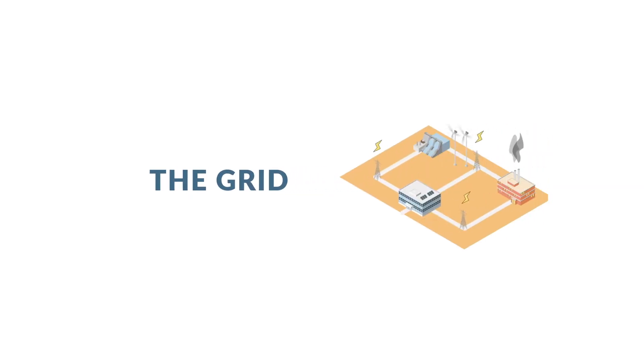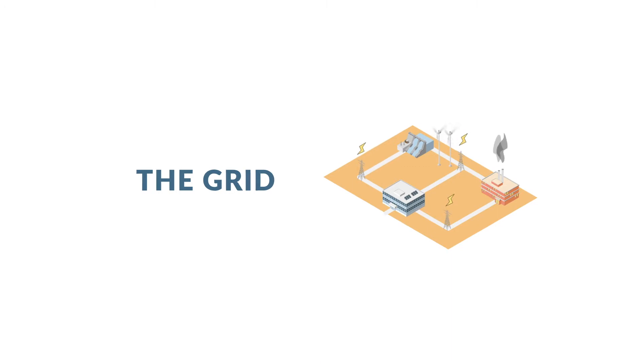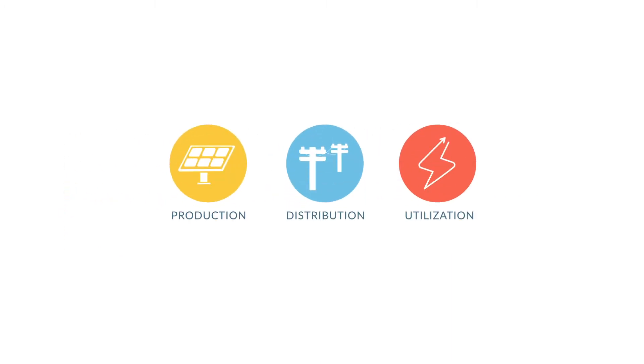The utility grid is the local power network that connects our community, made up of energy production, distribution, and utilization.